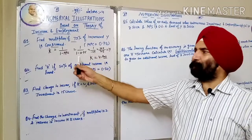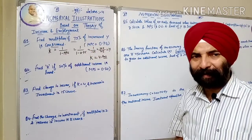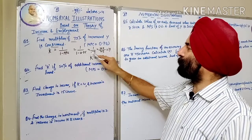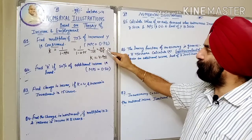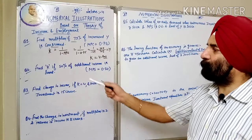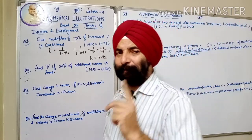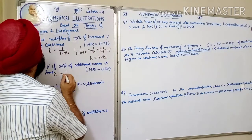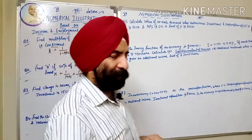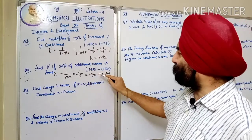In the next case, K is a multiplier = 1 upon (1 minus MPC). Here we are told 75% of increased income is saved, so MPS is 0.5. K is equal to 1 upon MPS = 1 upon 0.5 = 10 by 5. K की value 2 is the answer.